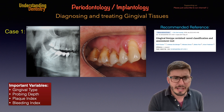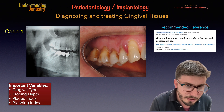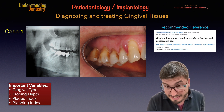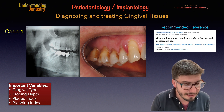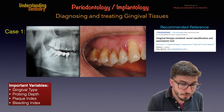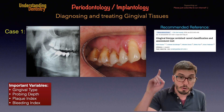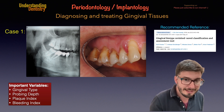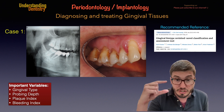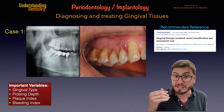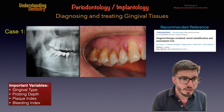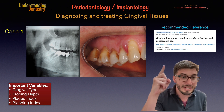We also have staining areas on the crowns, which will lead to an enhanced plaque index. Important variables include gingival type, and there is a recommended reference for understanding that gingival thickness and the width of the attached gingival tissue are very important — it can vary up to 10 millimeters. I really recommend you read this article.